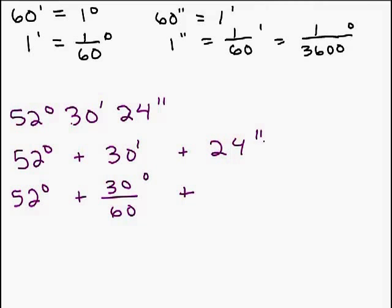Now, what about these seconds? Well, each second is 1/3600th of a degree. So you're changing that to degrees, you're going to have to divide by 3600. This will be 24 over 3600, and that will now be in degrees. So you're going to have to do this computation here: 30/60 plus 24/3600. That's going to be some decimal number, and then you're going to be able to attach that to the 52 point something.